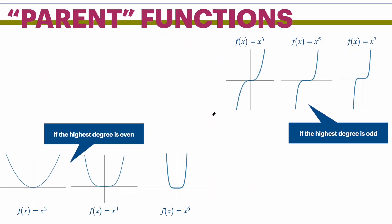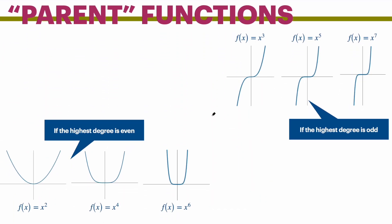First, you need to recognize what the parent functions look like. If the highest degree is even — meaning x squared, x to the 4th, x to the 6th, x to the 8th, x to the 10th — it will both go in the same direction. If the left side goes up, then the right side goes up as well.